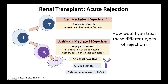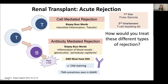For cell-mediated rejection, first-line treatment is pulsed steroids — high-dose steroids can actually melt away cell-mediated rejection quite satisfyingly. Second line would be T-cell depleting antibodies such as thymoglobulin and ATG, used for very severe rejection or vascular rejection, where the cell-mediated rejection extends into the blood vessel wall. That's very alarming and we'd go straight to thymoglobulin in that setting.